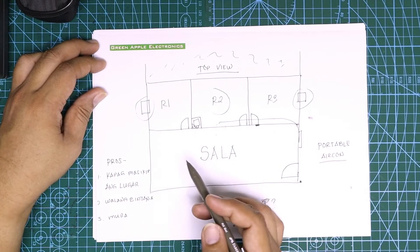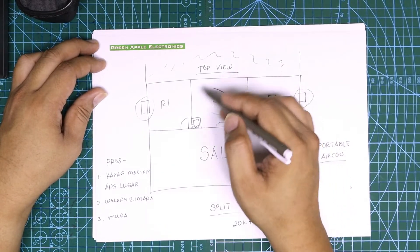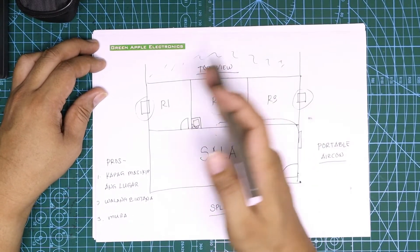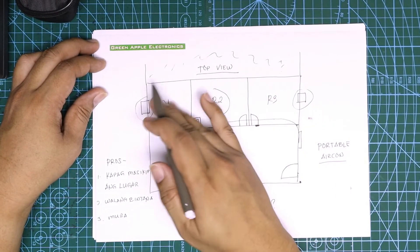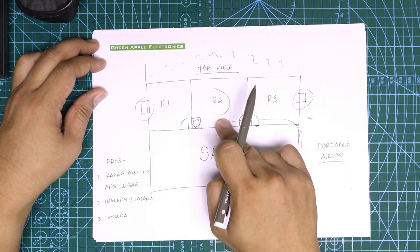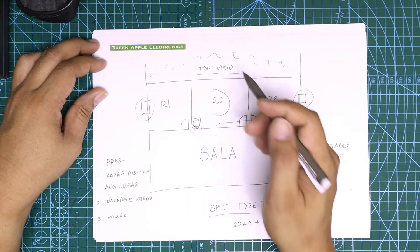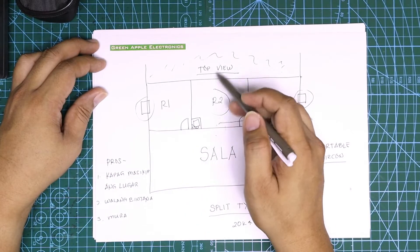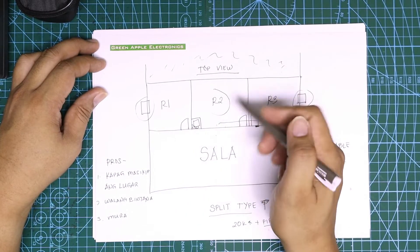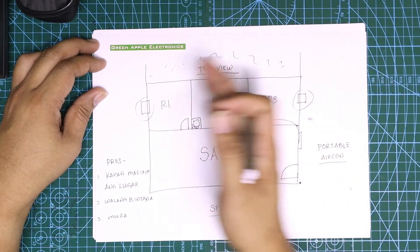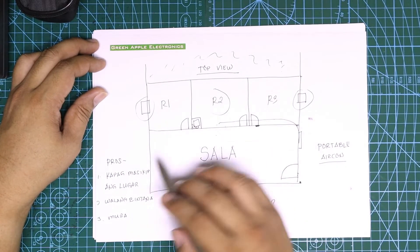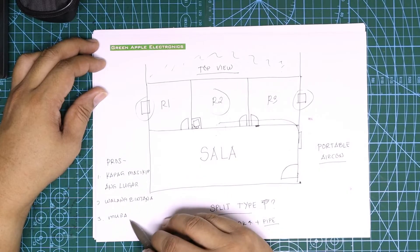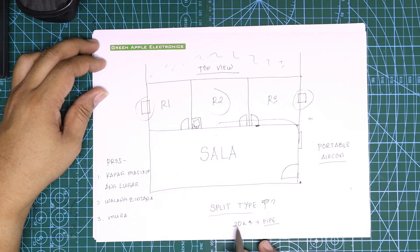Kapag masikip ang lugar gaya nito, nakaipit — naka-sandwich yung room na to, walang bintana, wala siyang sidings, at mura compare sa split type.